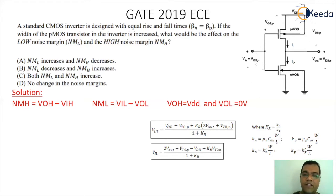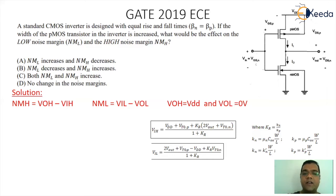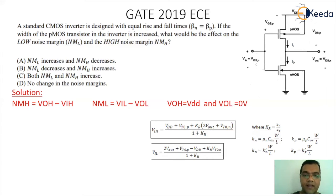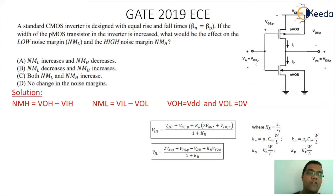In the VIH formula, if the KR value is decreasing, then the VIH value will increase. When we go for the noise margin high calculation, it is VOH minus VIH, where VOH is VDD. So: width increases → KP increases → KR decreases → VIH increases → noise margin high will reduce, because we are computing VDD minus VIH, and since VIH has increased, the noise margin high will actually reduce.